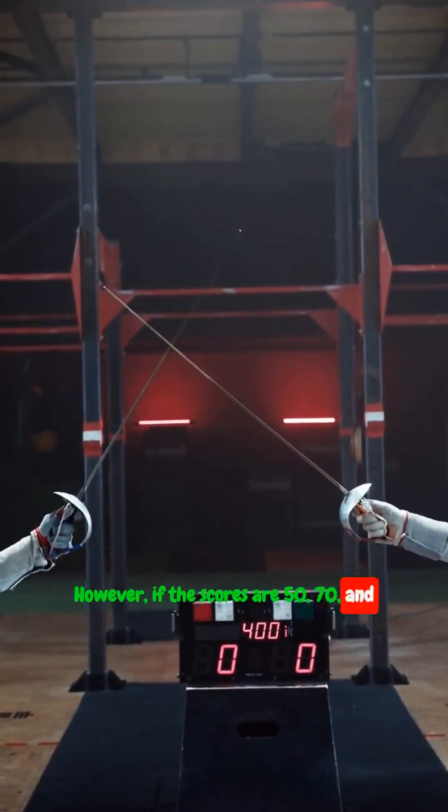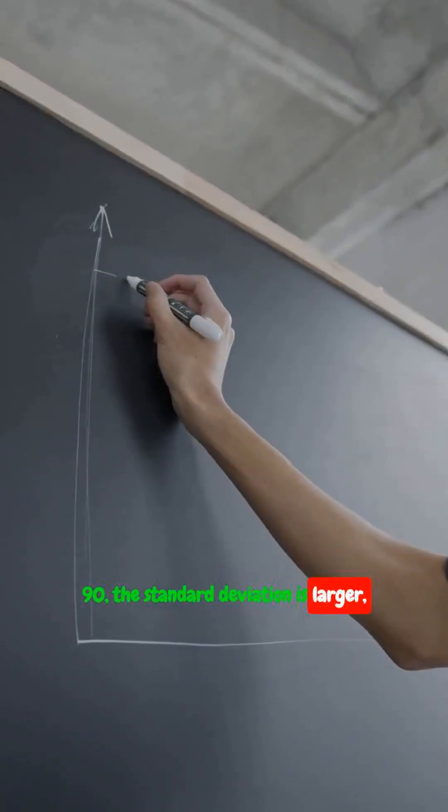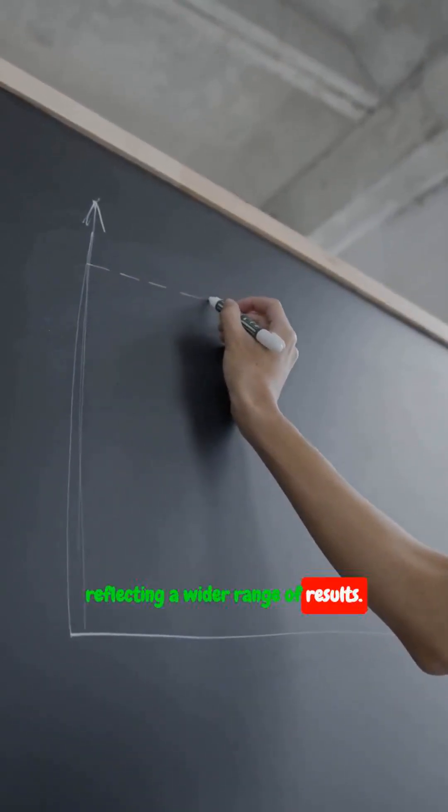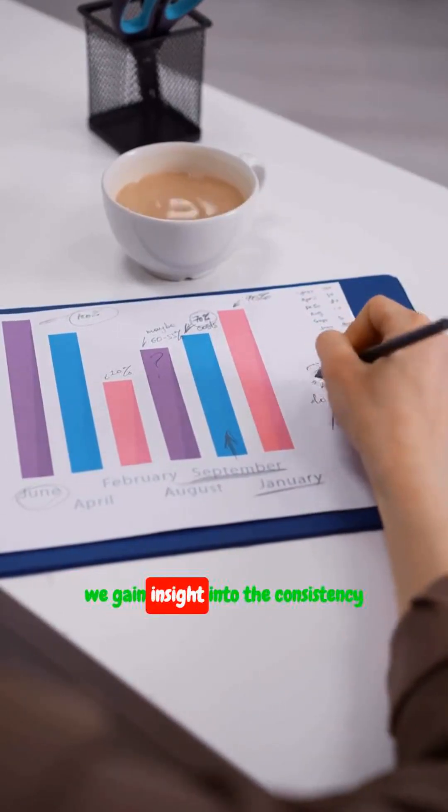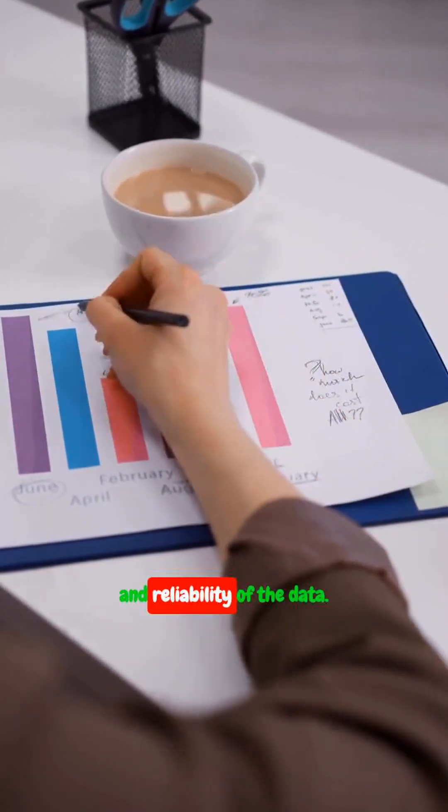However, if the scores are 50, 70 and 90, the standard deviation is larger, reflecting a wider range of results. By calculating standard deviation, we gain insight into the consistency and reliability of the data.